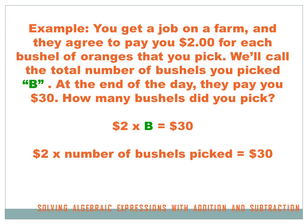Let's look at an example to see how a variable might be helpful to you. You get a job on a farm and they agree to pay you $2 for each bushel of oranges that you pick. We'll call the total number of bushels that you pick B. At the end of the day they pay you $30. How many bushels did you pick?